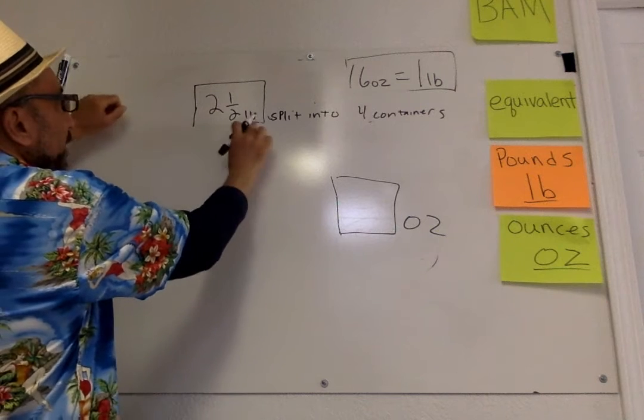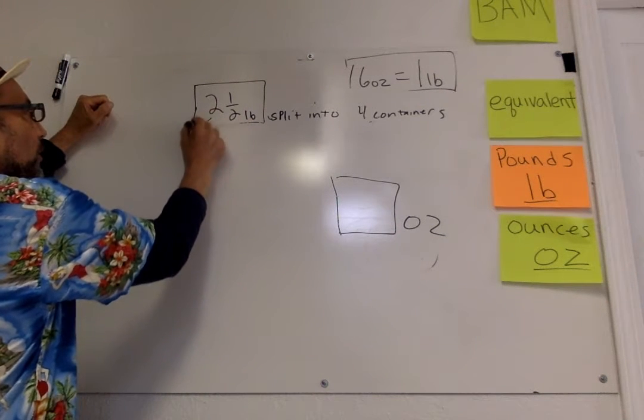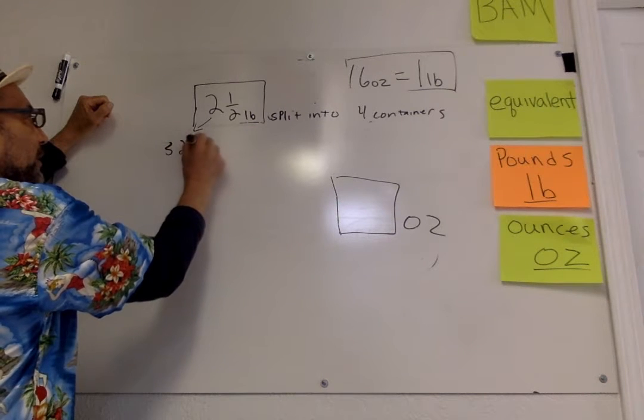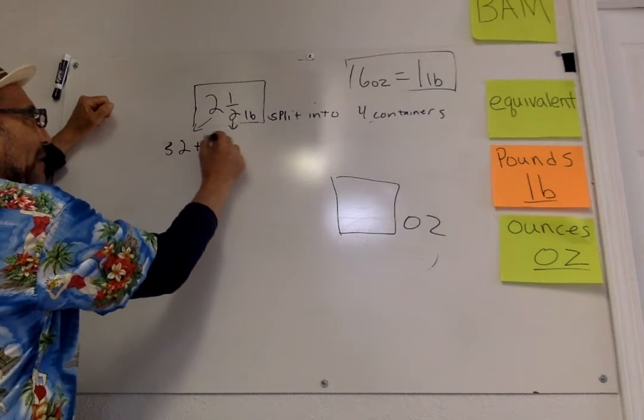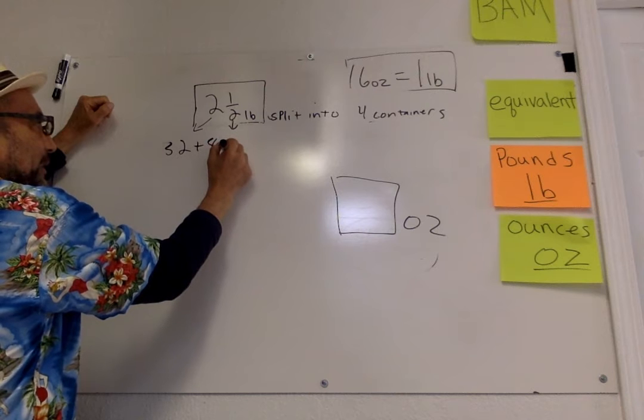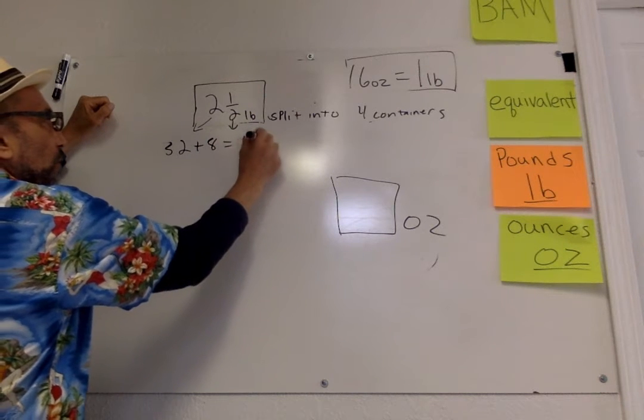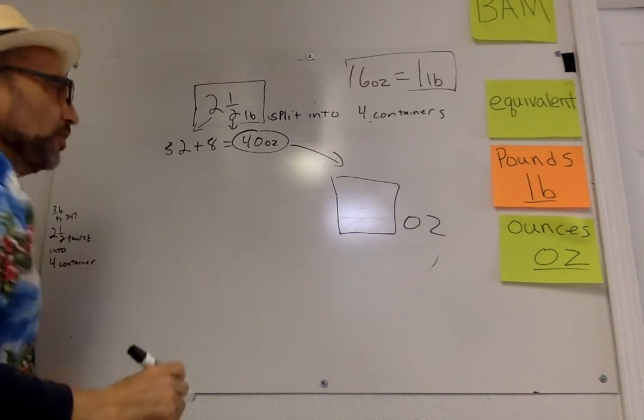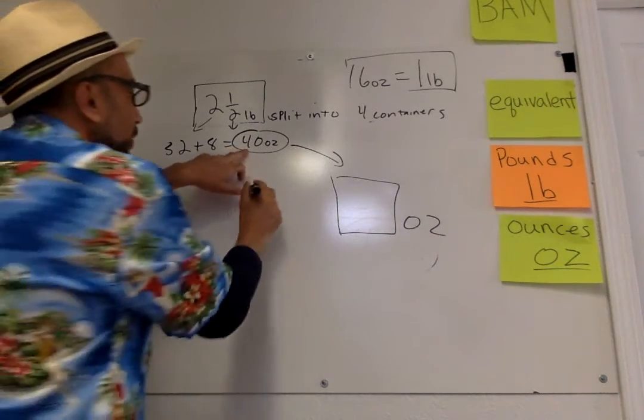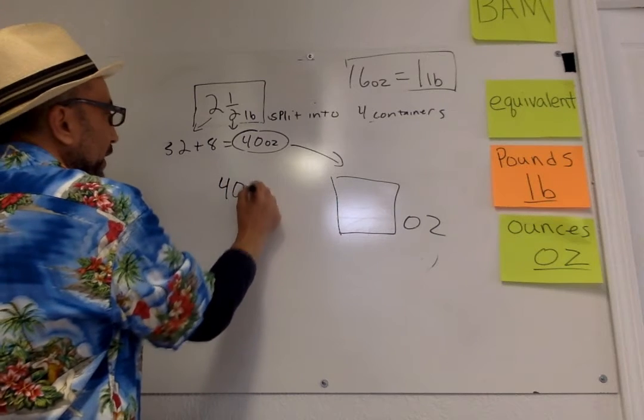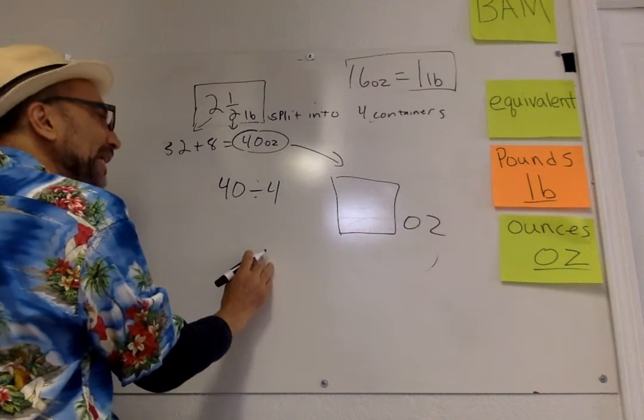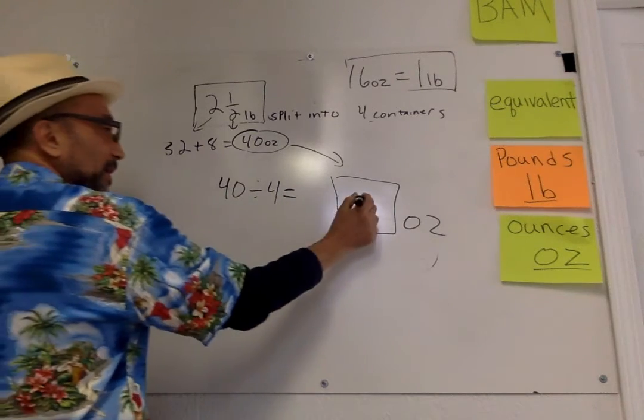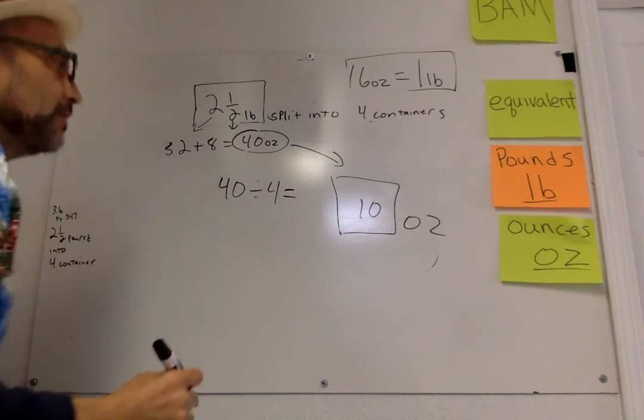So we change this two and a half. Two pounds equals 32 ounces, plus the half, which is eight ounces. So that equals 40 ounces. Now we can start doing that. But then we have to divide 40 divided by four containers. And of course that's easy. Well, now we know that's easy. This part's easy. We just divide, 10 ounces.